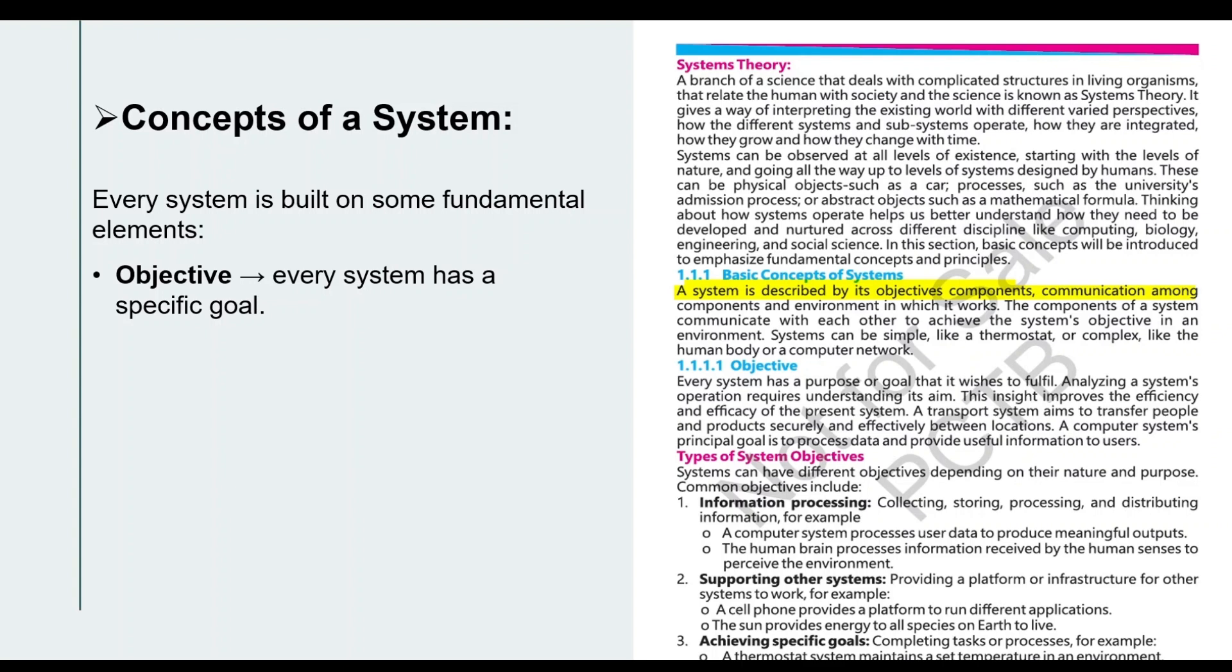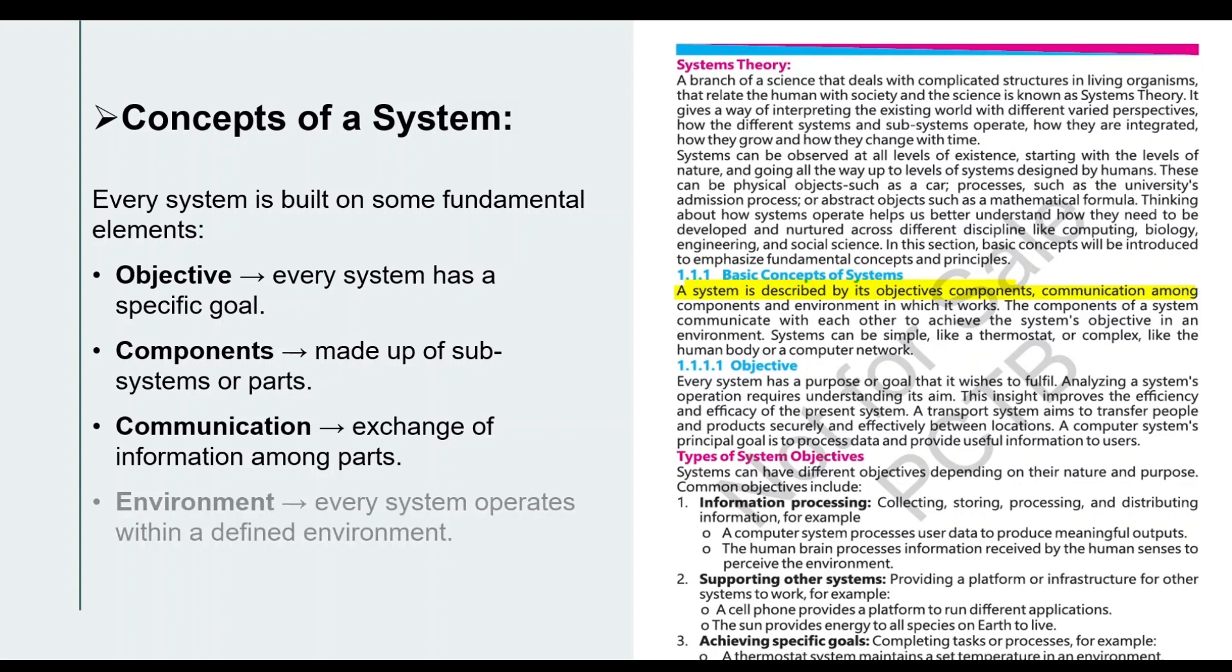Every system has a specific goal - what benefit is the system giving? Next is components - every system is made up of some components. Which parts are being used, how are they integrated, how are the different parts communicating with each other - we need to see this. And the last basic concept of system is environment - every system operates in a specific environment, so we need to study that.